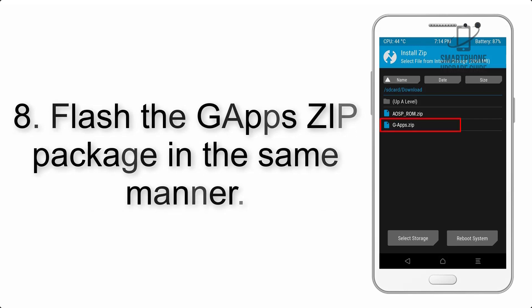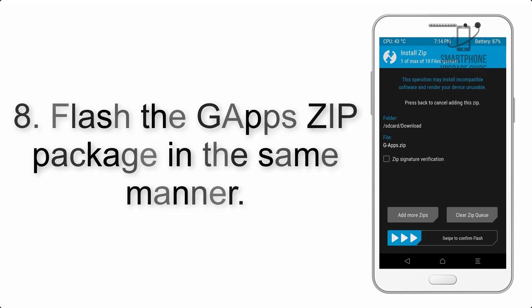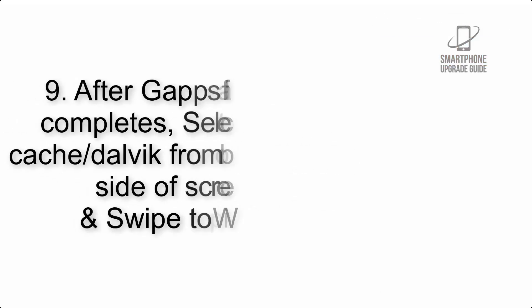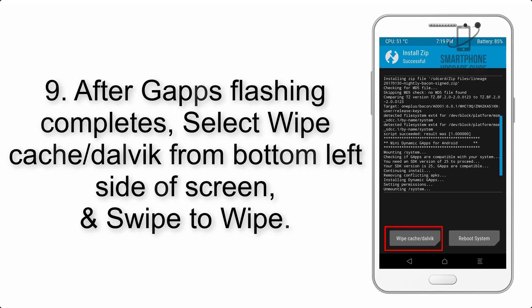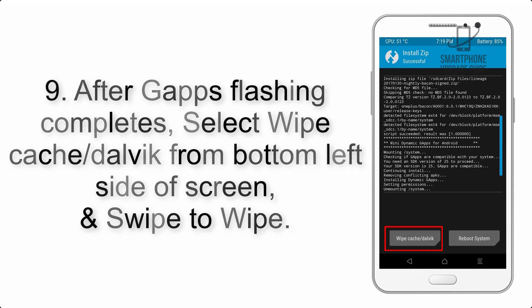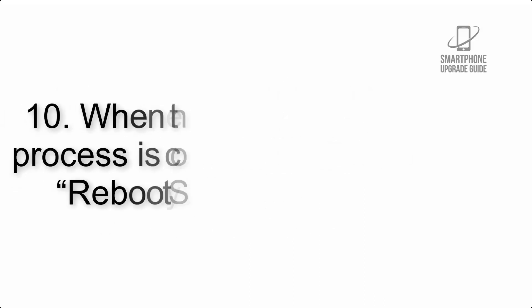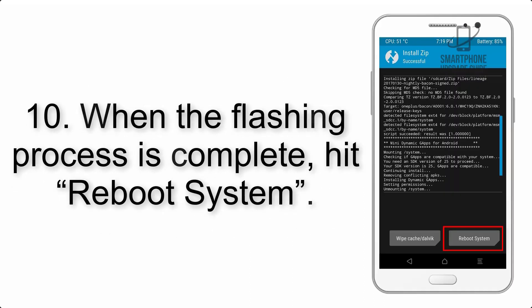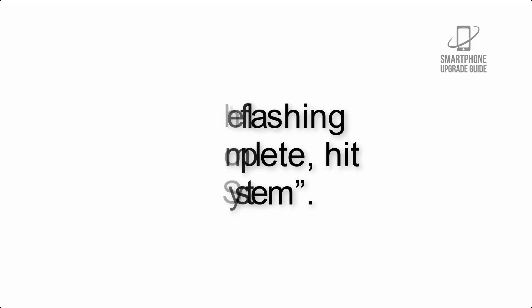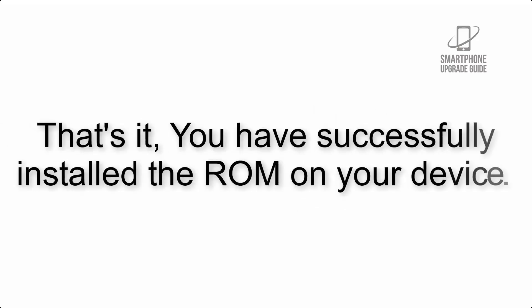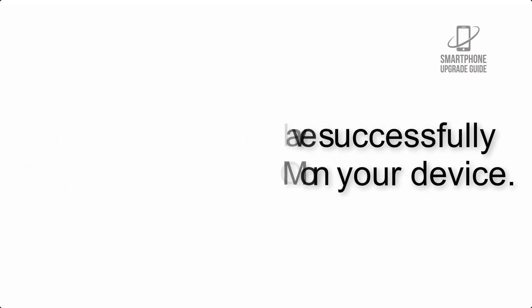Step 8: Flash the GApps zip package in the same manner. Step 9: After GApps flashing completes, select Wipe Cache and Dalvik from the bottom left side of the screen and swipe to wipe. Step 10: When the flashing process is complete, hit Reboot System. That's it — you have successfully installed the ROM on your device.